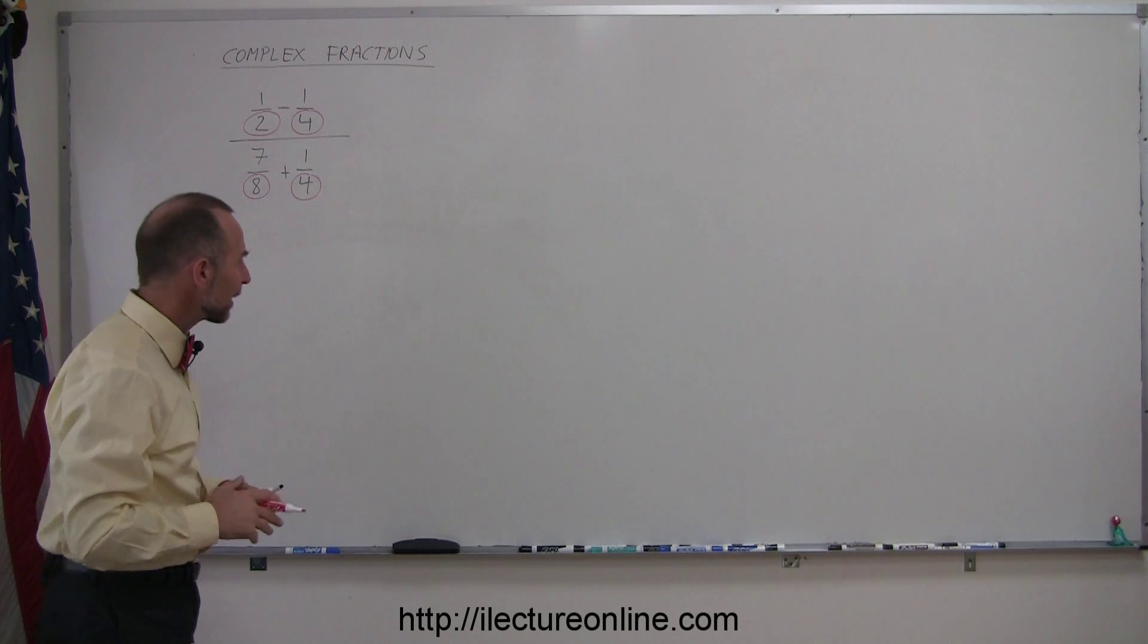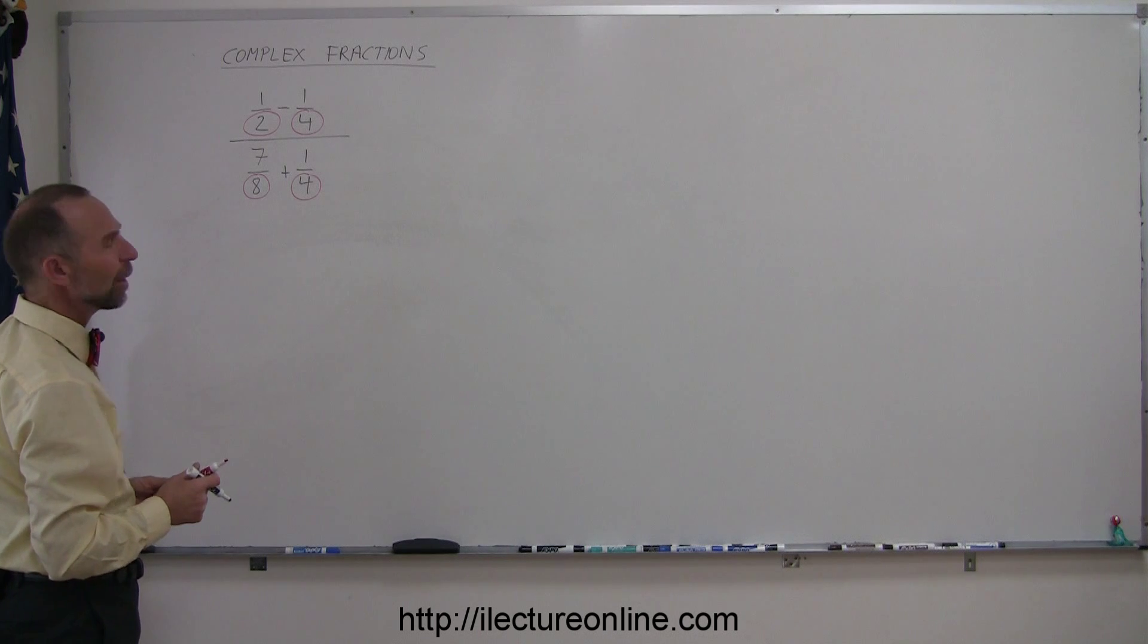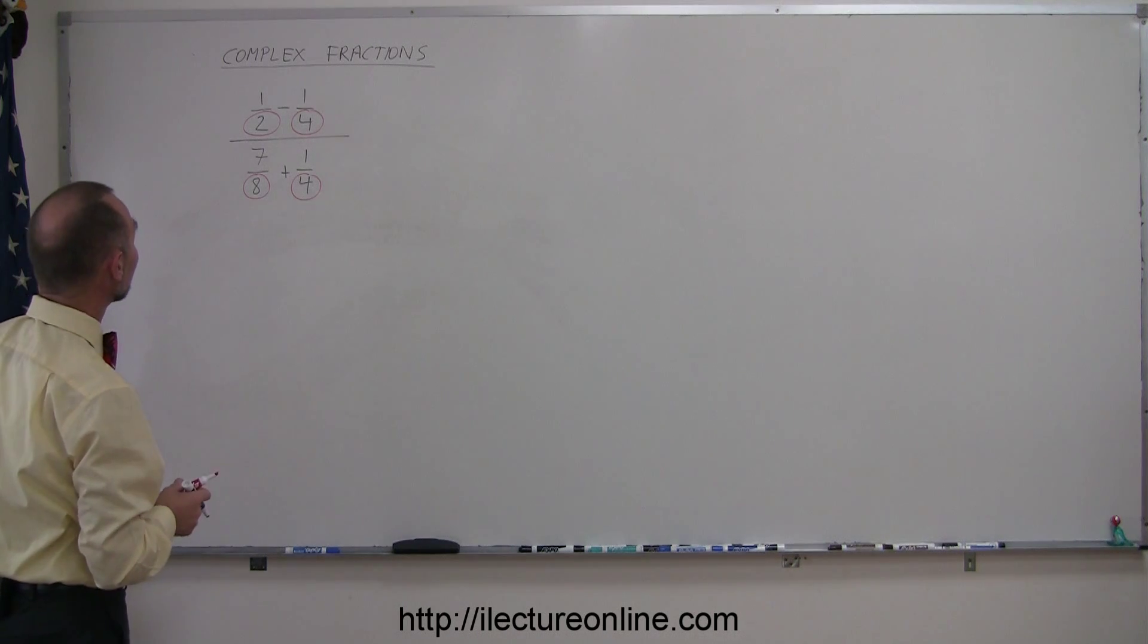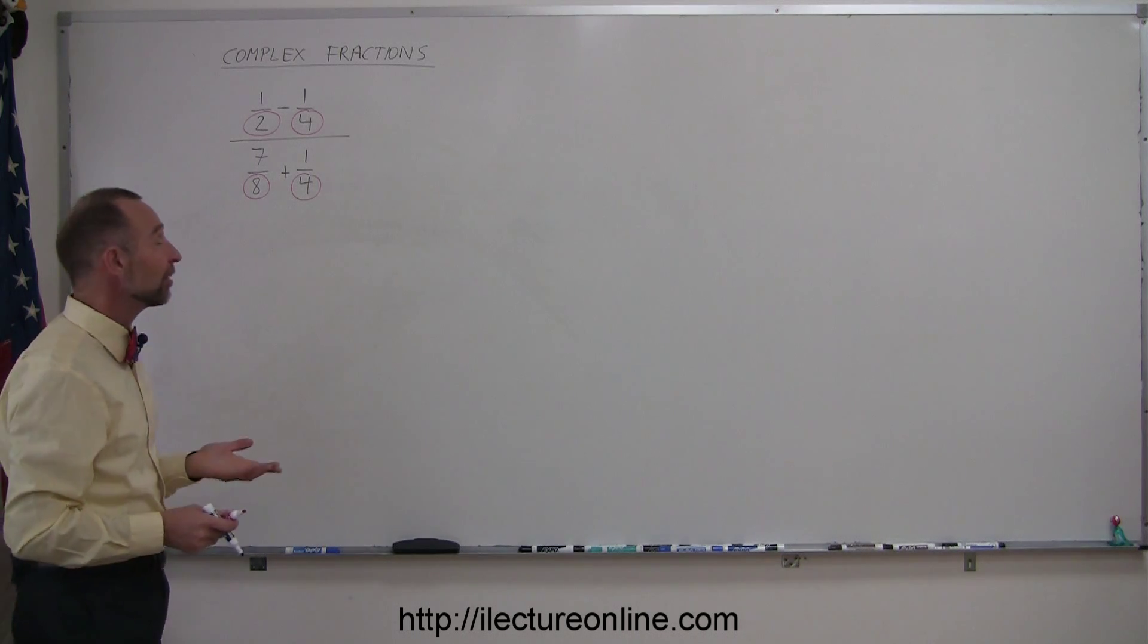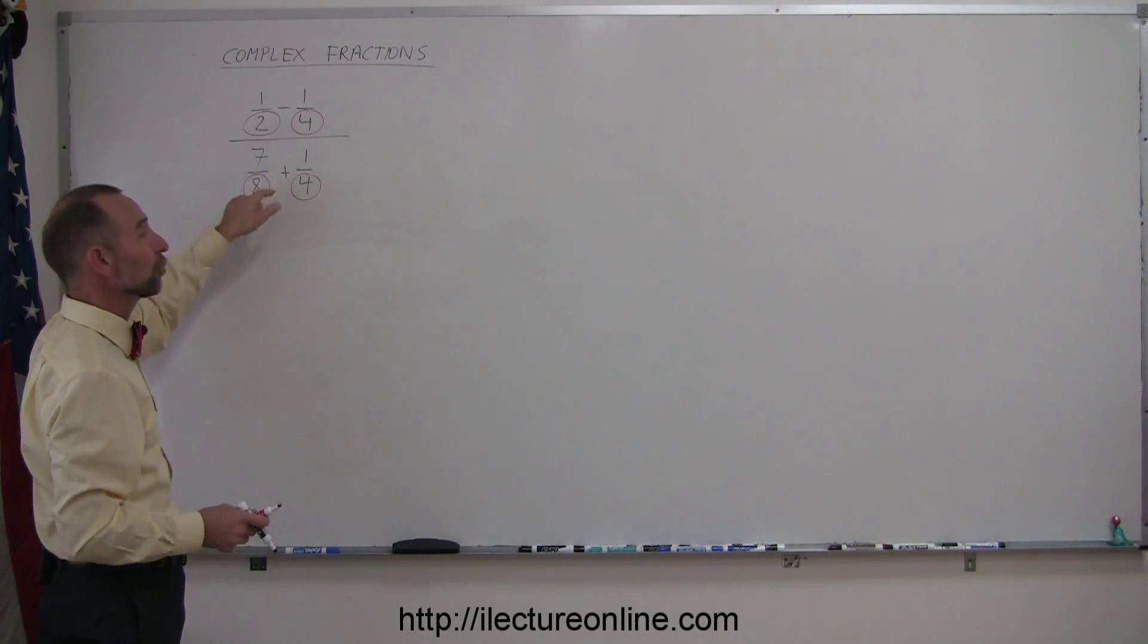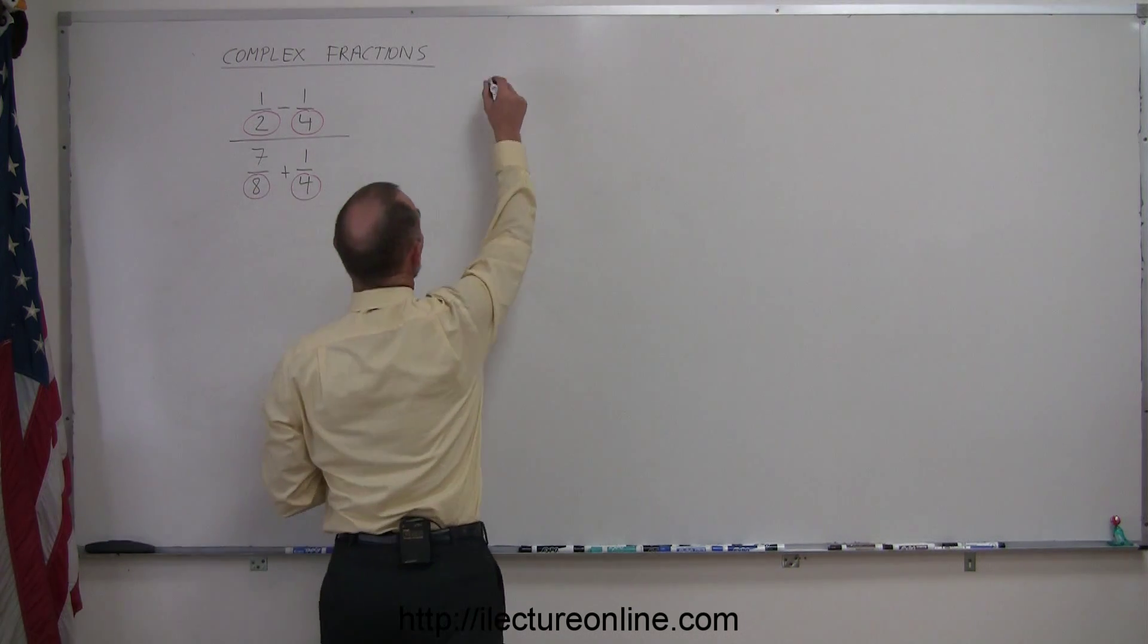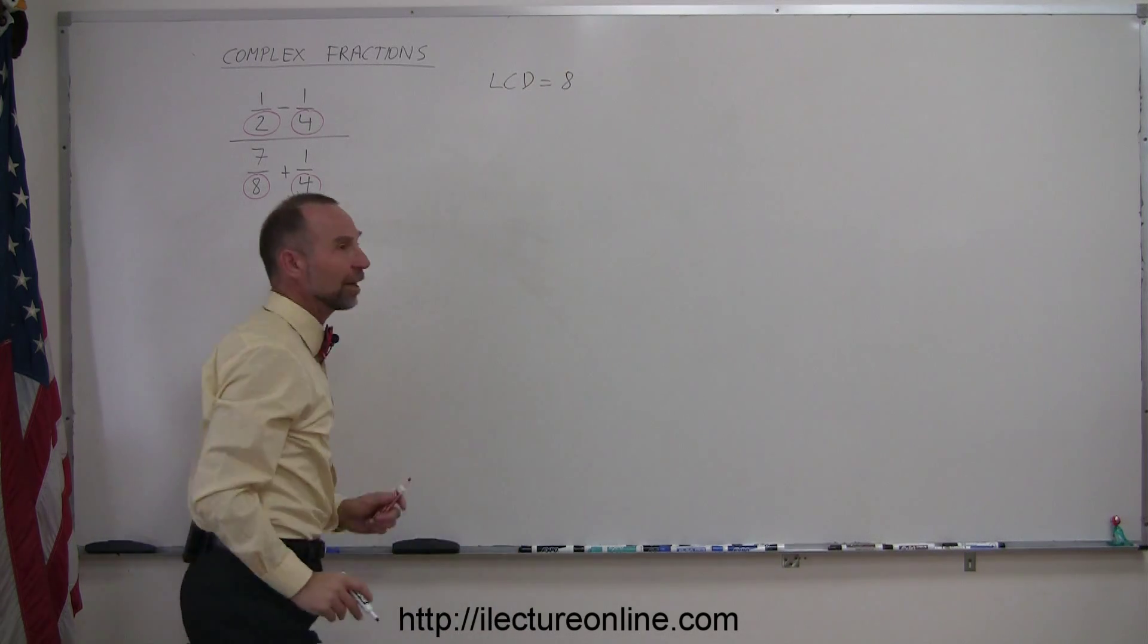So the trick that I like to use here is to find the lowest common denominator of all the denominators of all the fractions in this complex fraction. That's a mouthful, isn't it? But in other words, look at all the numbers that I circled and what is the lowest common denominator. In this case it looks like 8, because 4 fits into 8 evenly and so does 2. So we can say that the LCD in this case is equal to 8 of all these fractions in there.